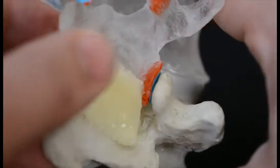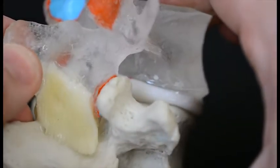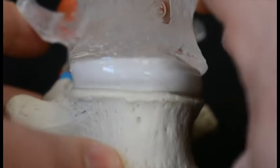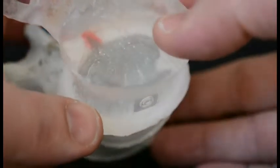With a hypermobile anterior disc, the facets will approximate and rub more frequently, causing pain and fibrillation within the hyaline cartilage.